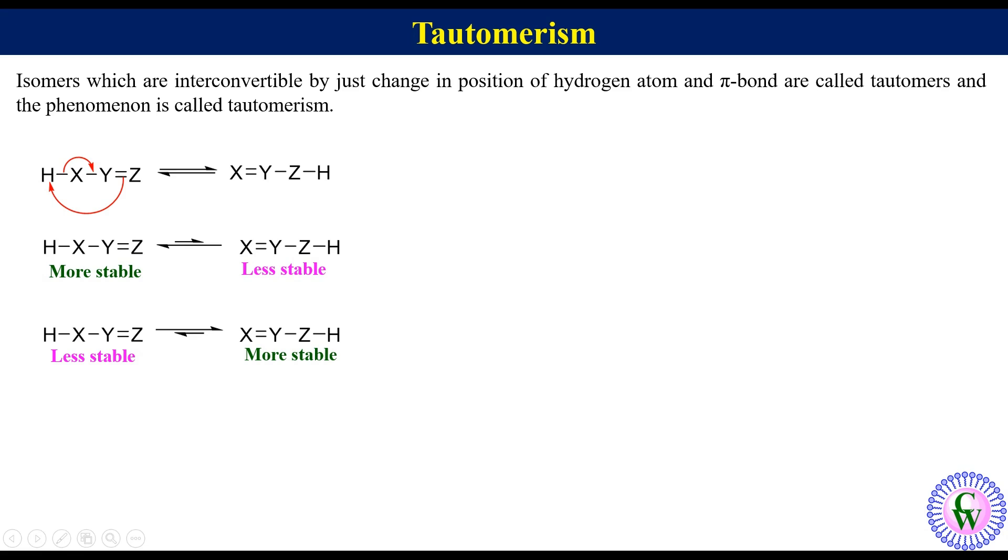Second example is amide-imidic acid tautomerism. Here I am taking the example of N-methyl acetamide. This is amide form. Relocation of proton from nitrogen to oxygen and change in the position of pi bond like this gives iminol form. Amide form is more stable than iminol. So the reversible arrow will be like this.